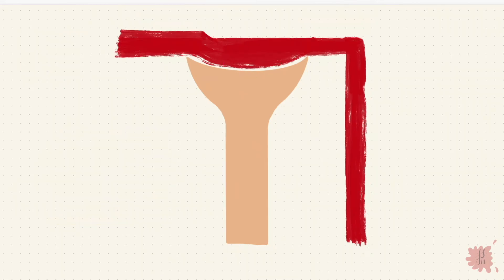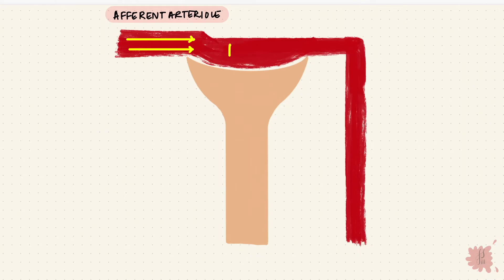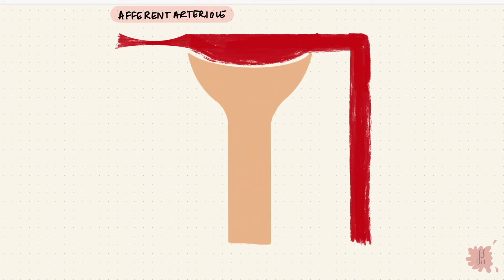If the afferent arteriole is dilated — say under the effect of prostaglandins — that means there's more renal plasma flow. That increases the capillary hydrostatic pressure, so there's higher filtration, and that's a higher GFR. The opposite would happen if it gets constricted: there will be lower renal plasma flow, lower hydrostatic pressure in the glomerulus, and so lower filtration.